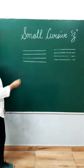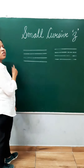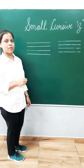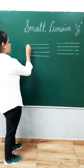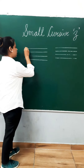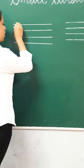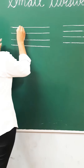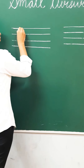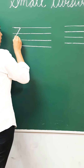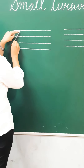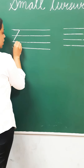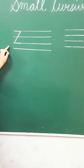Now see the formation. First of all we will make capital Z, and you know how to make it because you have learnt it in nursery class. You have to make one sleeping line on the first line. Then make one slanting line which will start from the first line till the third line. And make another sleeping line like this.